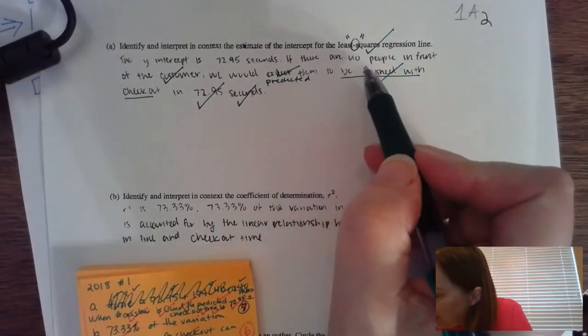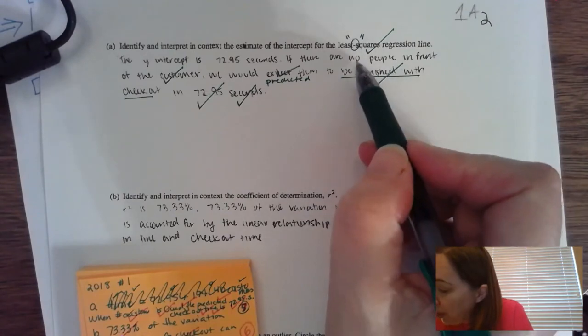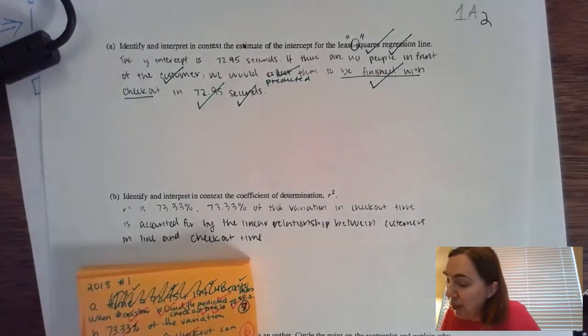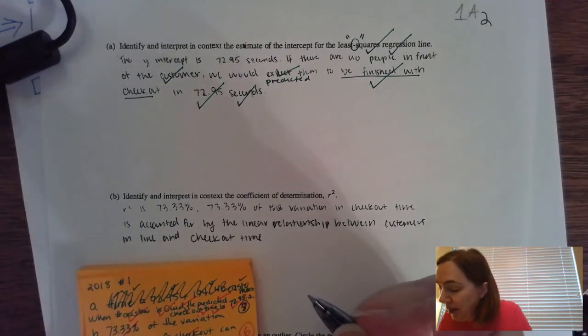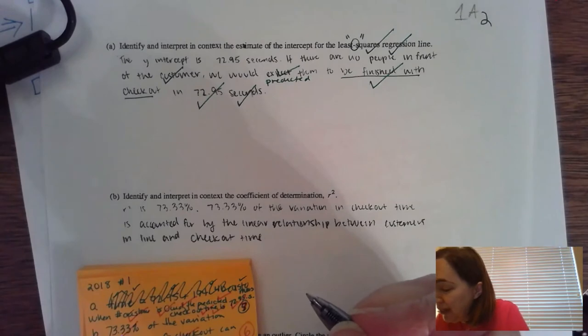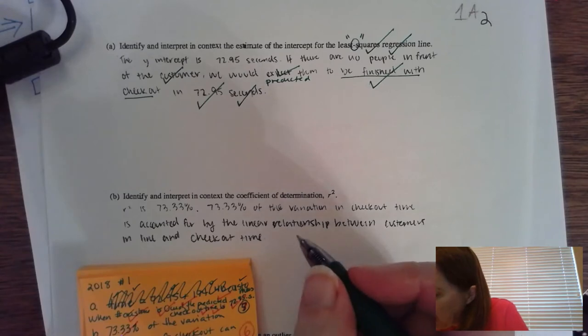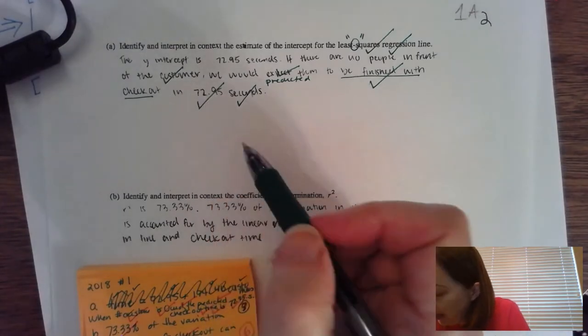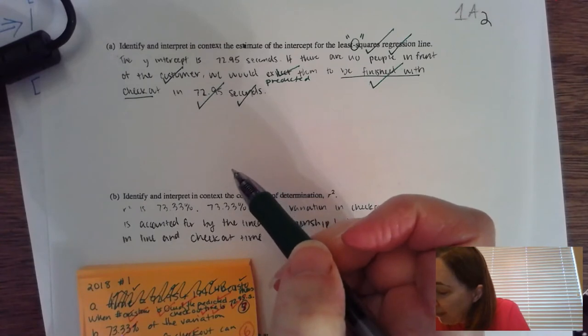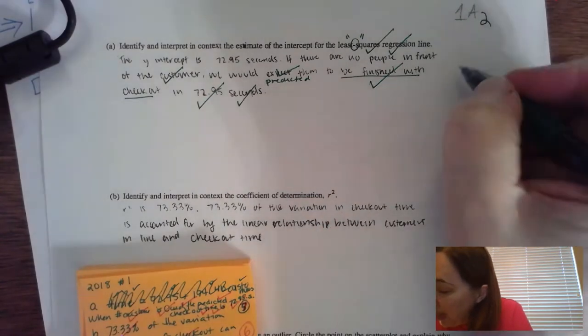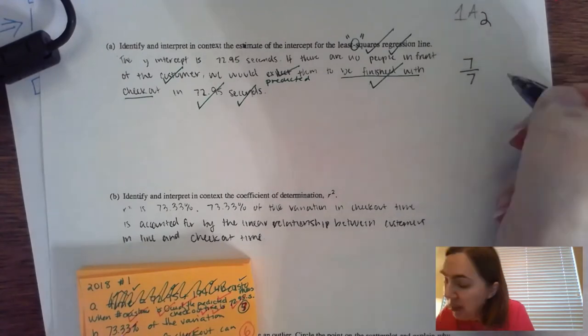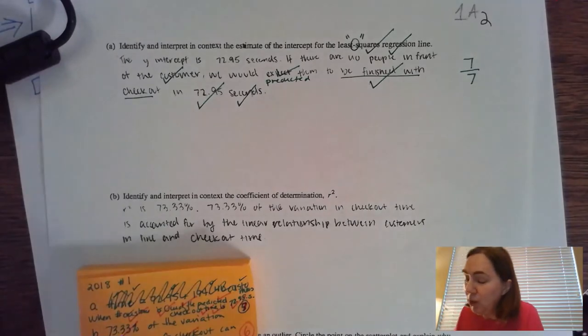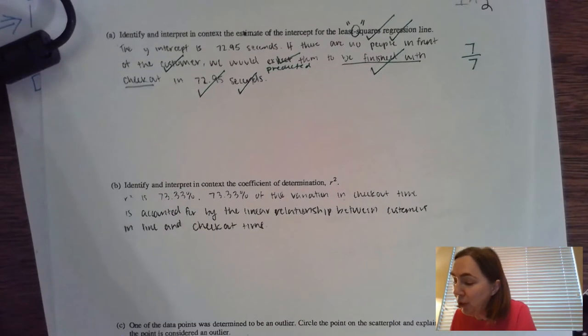I think I forgot one check. When the number of customers in line, there needs to be when there are zero people or customers, there needs to be a check for the x unit. So when the number of customers in line is equal to zero customers, the predicted amount of time that it takes to checkout is 72.95 seconds. That is going to give complete credit for this particular problem. There are seven checks right here. My person got seven out of seven for this particular problem. Go back to your template for your y-intercept.